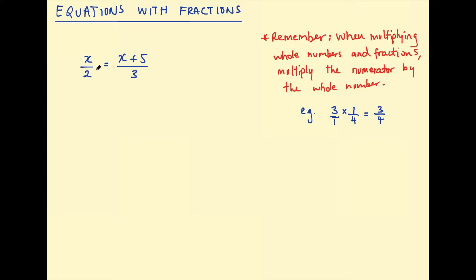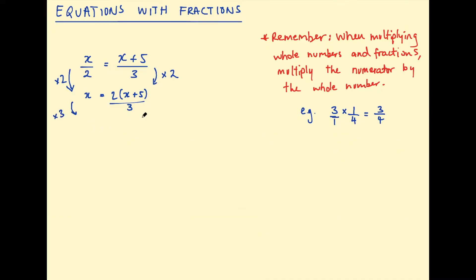So how can we do that? One way to think about it is to multiply this whole equation by two first. So we'll multiply the left hand side and the right hand side by two. Remember, whatever you do to the left you must do to the right because when we're solving equations we need to keep them balanced. So x over two multiplied by two is just going to be x. And on the right, this is a fraction multiplied by a whole number — we just multiply the numerator by that whole number. So we're going to have two multiplied by x plus five over three. I still have that three there, so now I want to multiply by three as well. So now we're going to multiply both sides by three. So x multiplied by three is three x, and two multiplied by x plus five. So now we have no fractions.